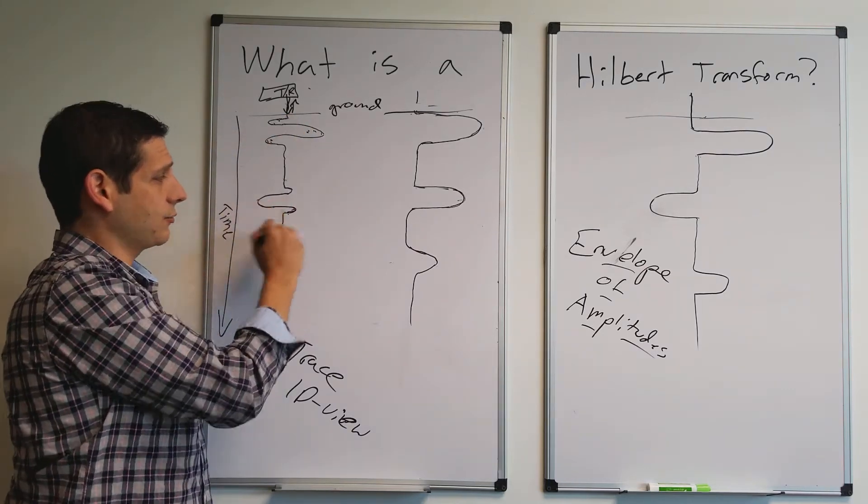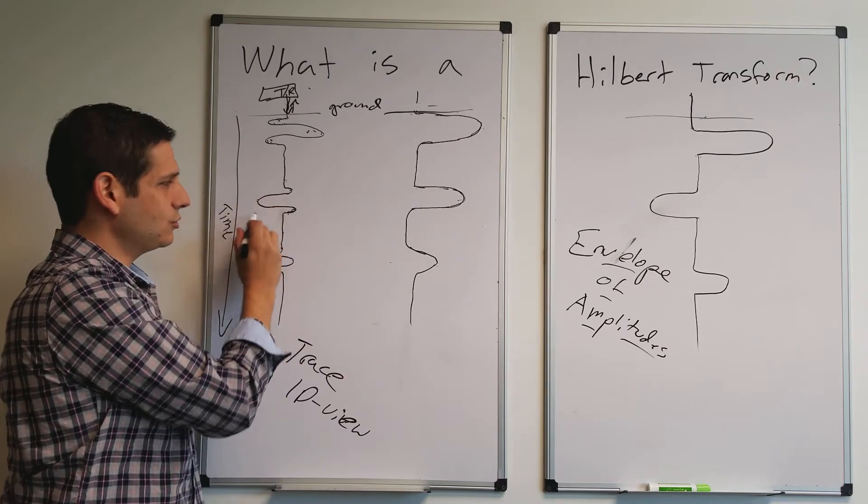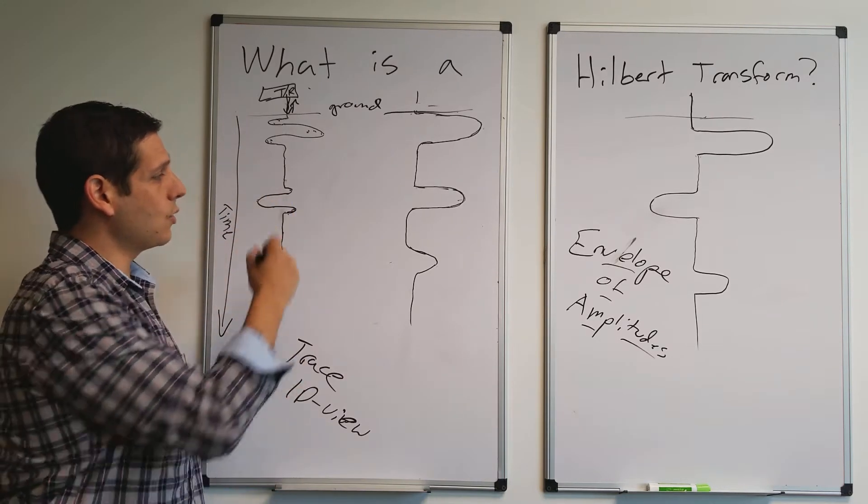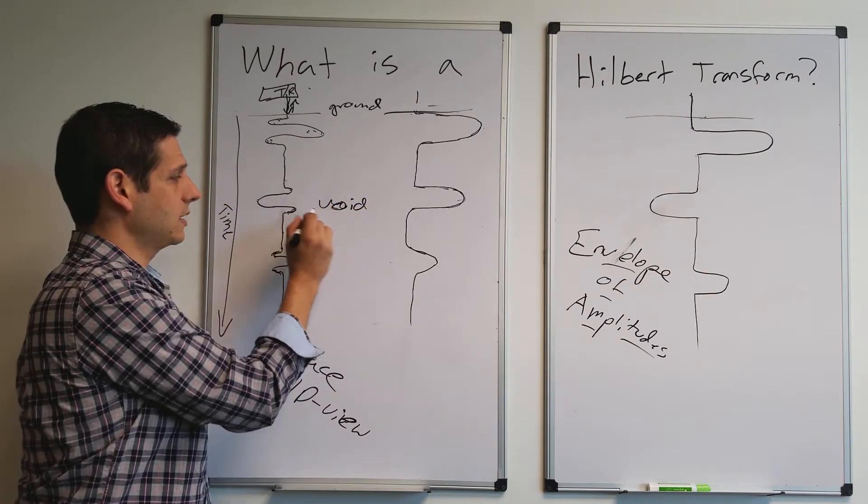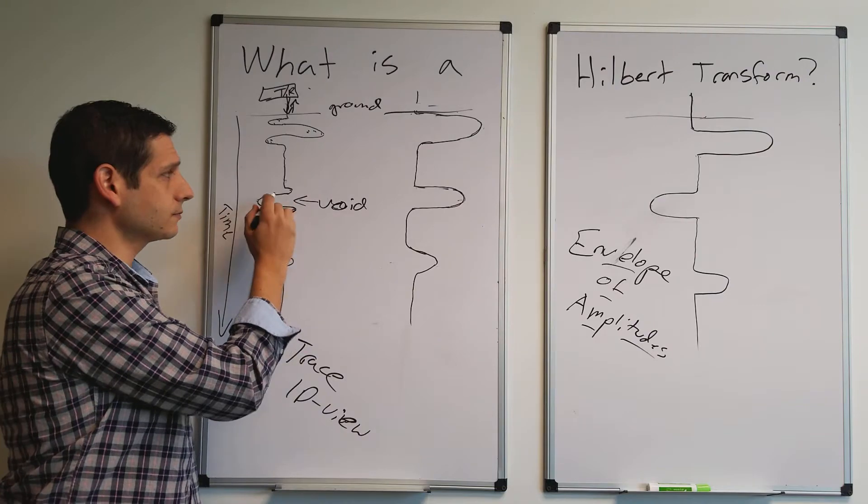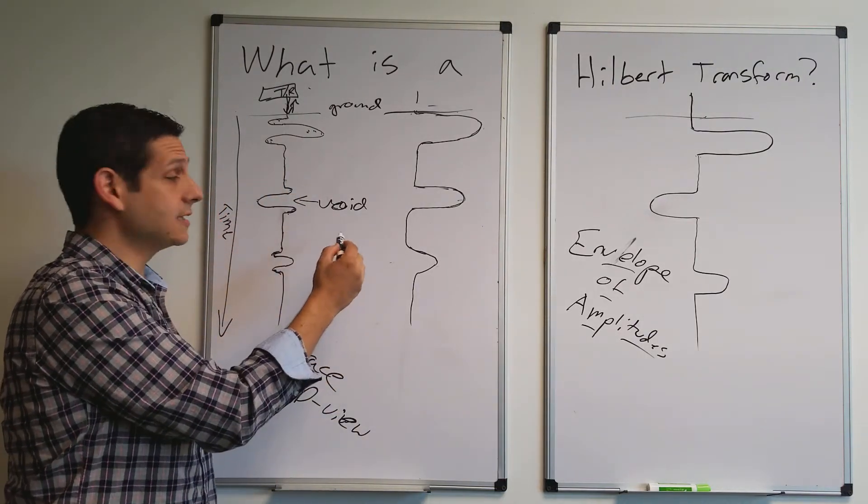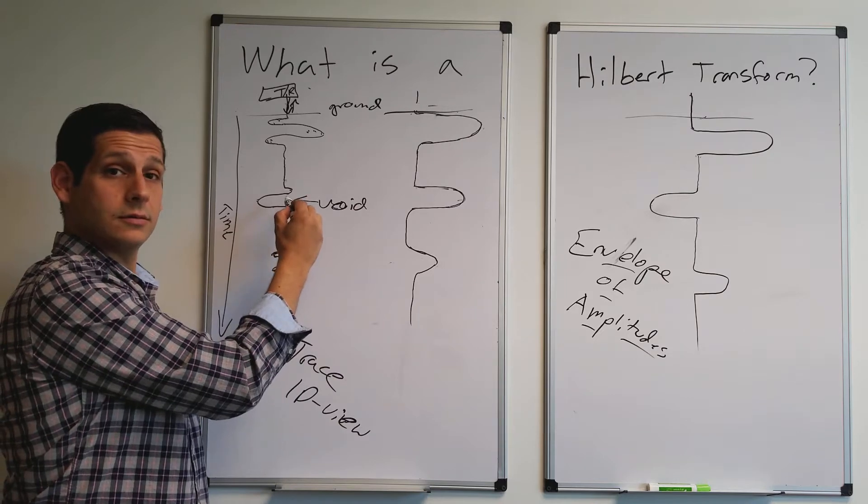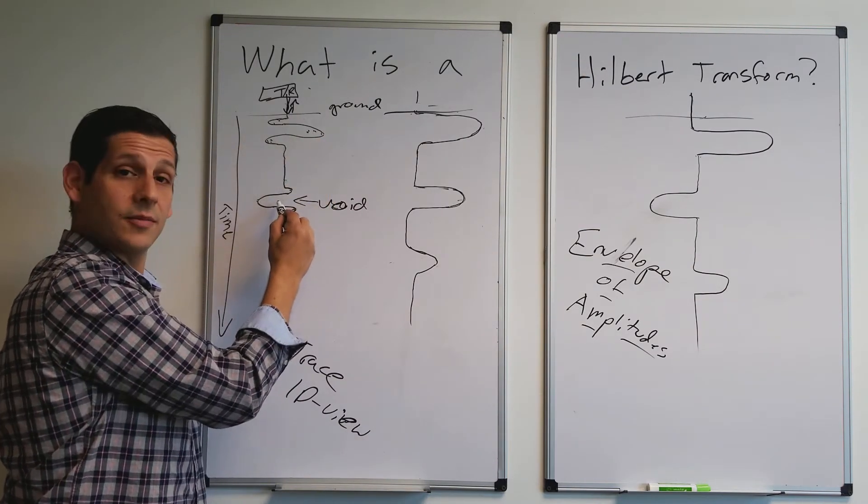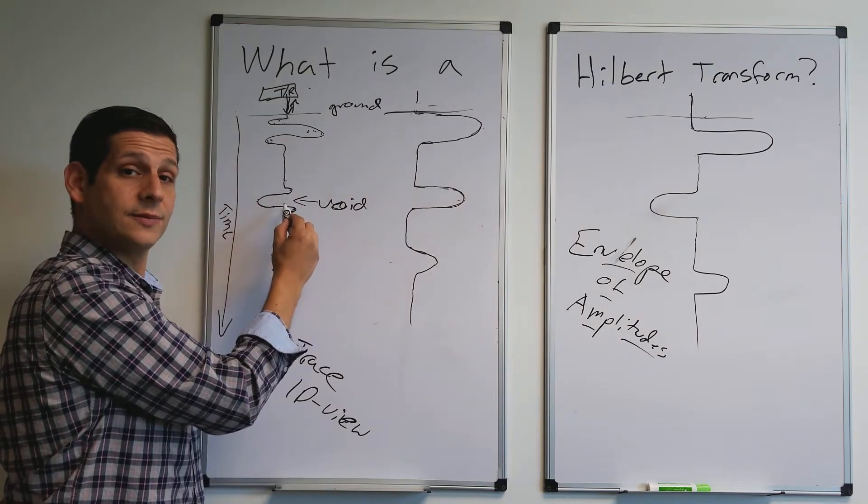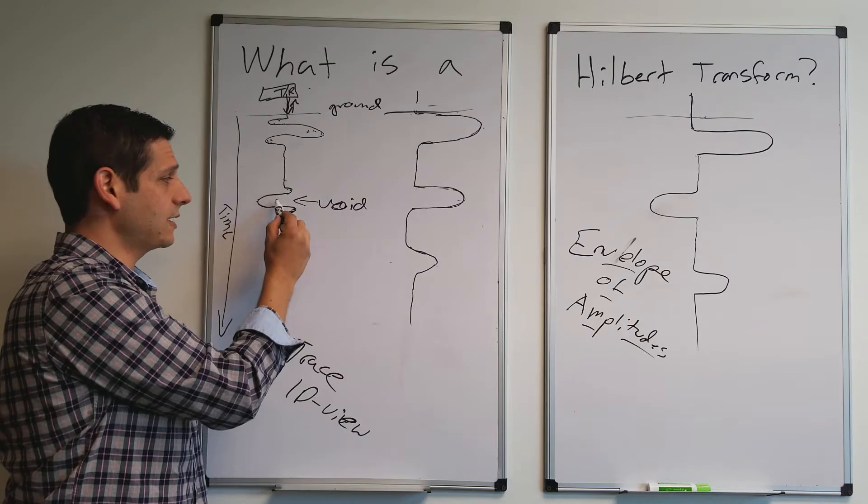So then what we have here is a reverse, right? So we have a positive, negative, positive. The amplitude's a little bit less. And so what might be going on here is, let's say, a void. Okay, so this could be a void. And the reason that it's a void, or that I'm saying that, is that it reversed. Right? It reversed. So if it slowed down going to the ground, it's sped up going into a void, right, into some void space filled with air. So you get a reversal. Point is, you get positive, negative, positive.